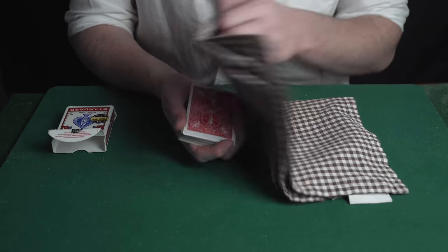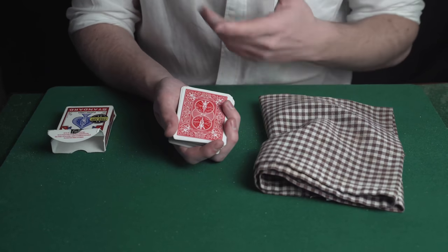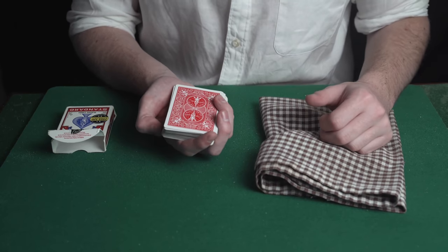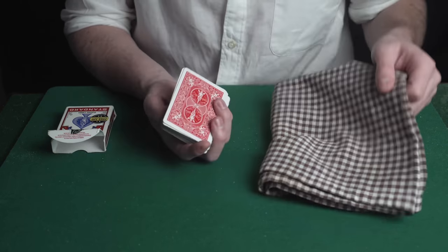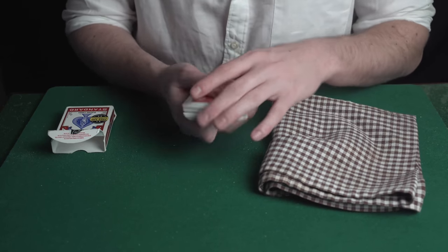Now take the cards, place them underneath the cloth, rub and reveal them and obviously nothing has changed. Now what's going to happen is you're going to do the same thing but when your hand is underneath the cloth you're just going to flip the deck over. That's as simple as this trick is.